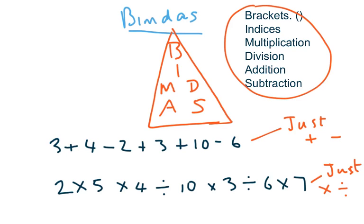So the first order, we do brackets, then we do indices. Indices, by the way, are things like 2 squared or 3 to the power of 4. In first year and second year, you probably mostly deal with squared numbers only. And then the third priority are multiplication and division, and then the fourth one are addition and subtraction.